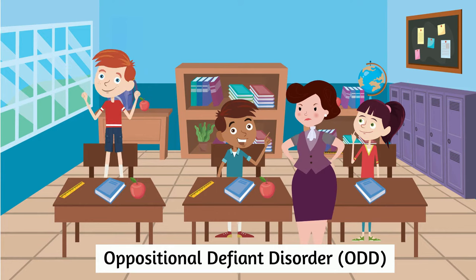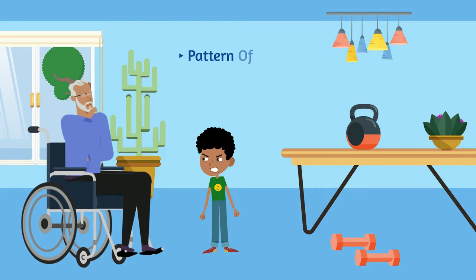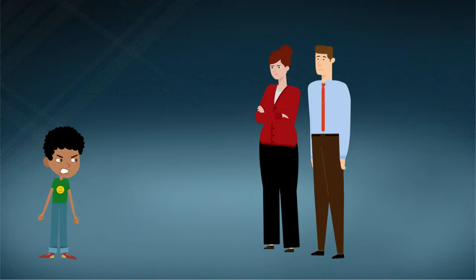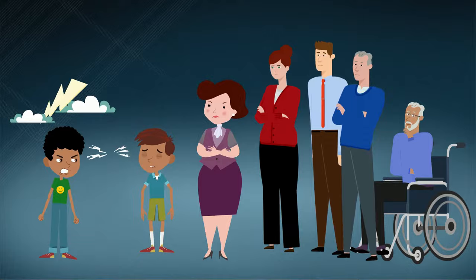Oppositional defiant disorder is a common behavioral condition among school-age children and can be defined as a persistent pattern of negative, hostile, defiant, and disobedient behaviors observed in a child's social interactions with adults and authority figures in general, such as parents, uncles, grandparents, and teachers, and may also be present in their relationships with friends and schoolmates.